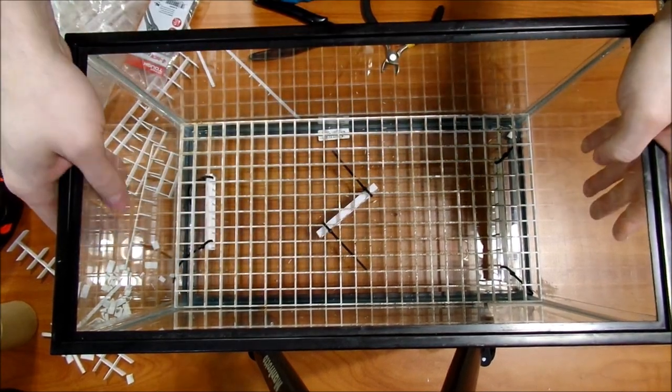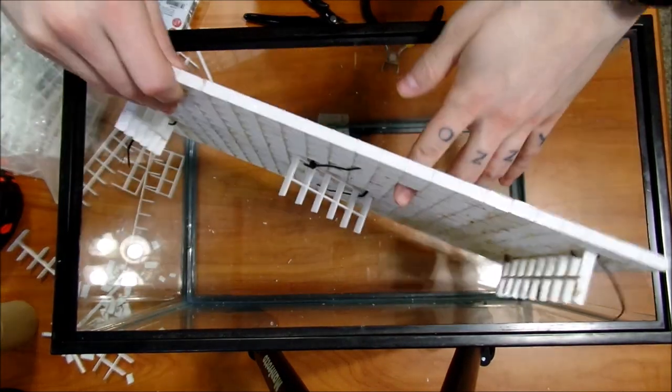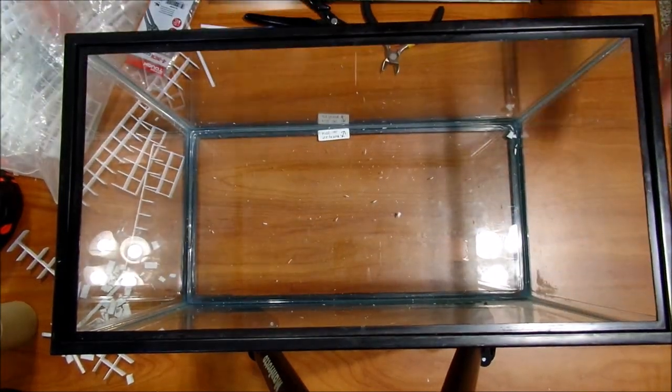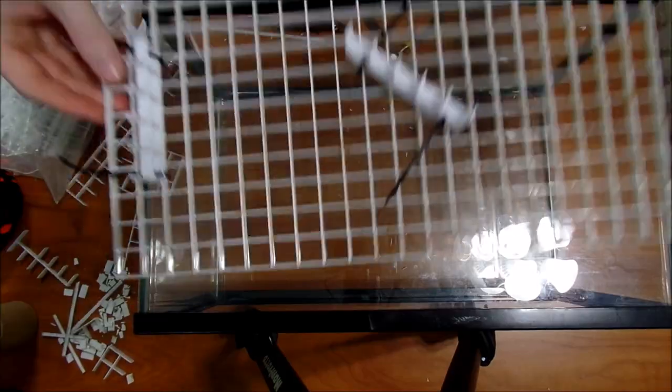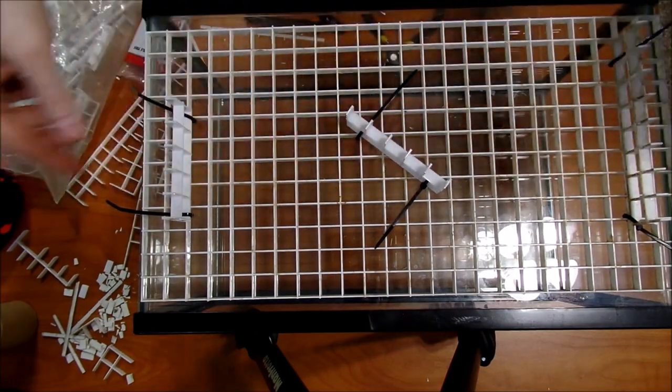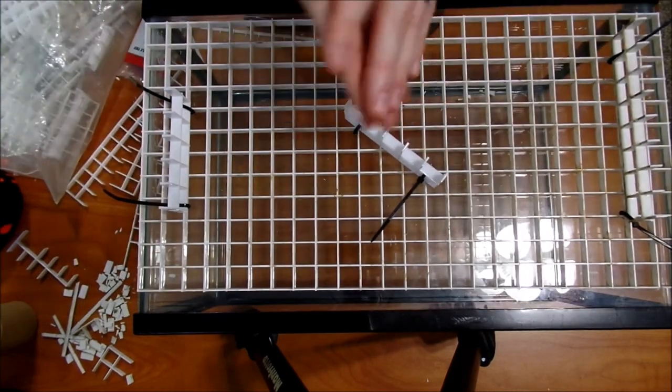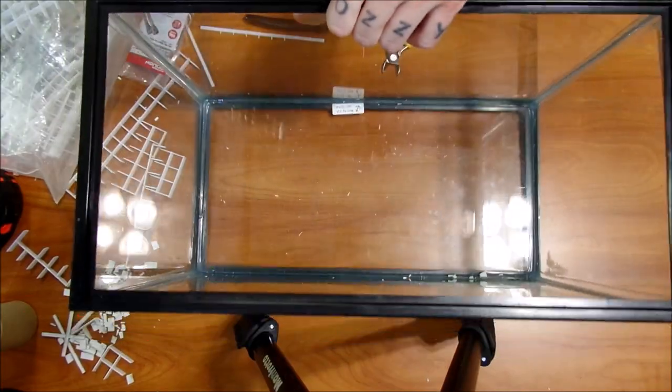After you cut through the sheet and have all your legs, you want to worry about sizing up your egg crate bottom. A great way to do it is to lay your aquarium on its side. Then you can put the egg crate up against the tape and see how long you need it to be. Always cut it a little bit long.